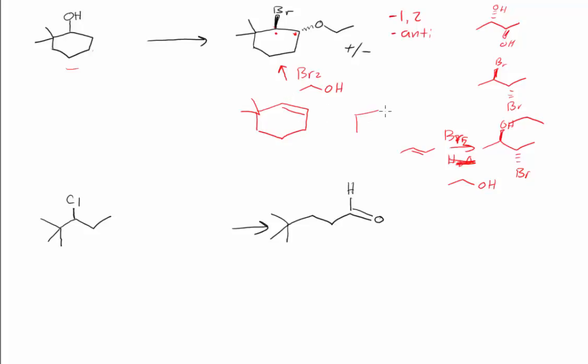So we might have some regiochemical issues, but we could produce this setup here via the bromine addition. And of course, we would get to this intermediate. And this then could be opened by the ethanol, right? We could do a backside attack, and we'd get our anti-ethanol. So then the question is, how do I get to this alkene?